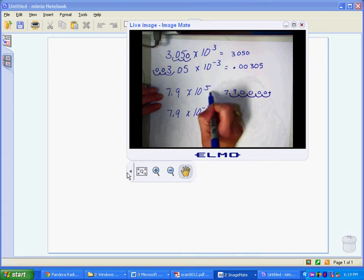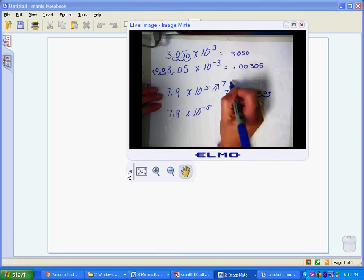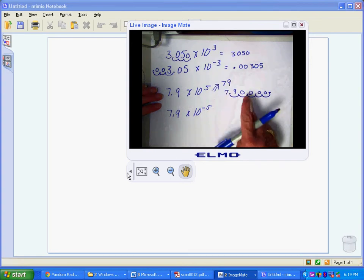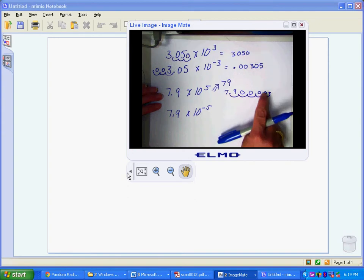So this number is equal to 79 with 1, 2, 3, 4 zeros there.